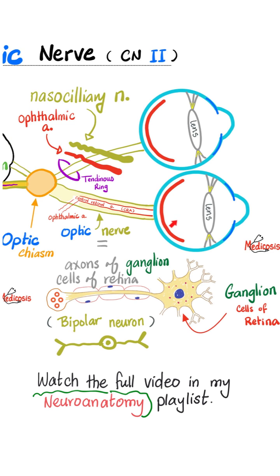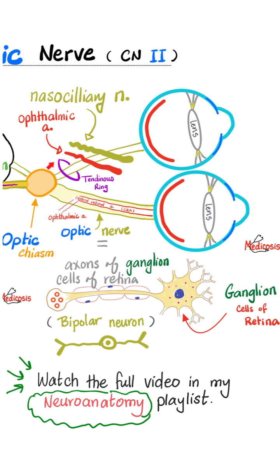The optic nerve starts in the ganglion cell layer of the retina. The axons then head backwards through the optic nerve, optic chiasm, and optic tract.